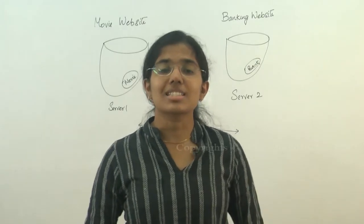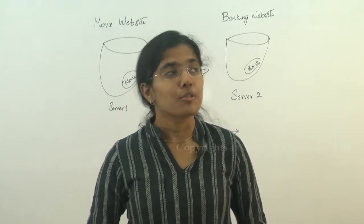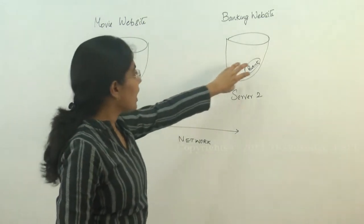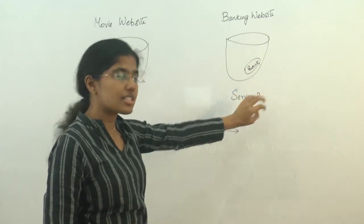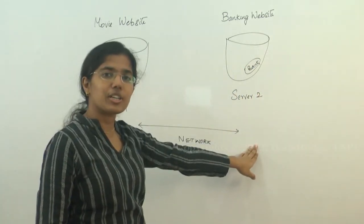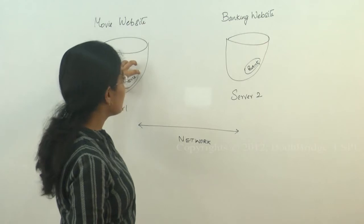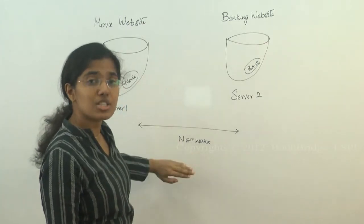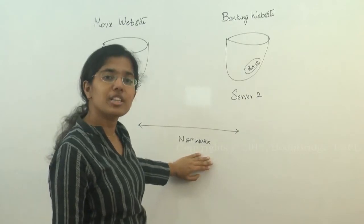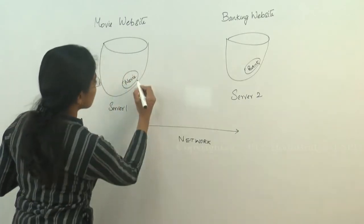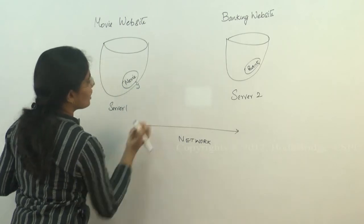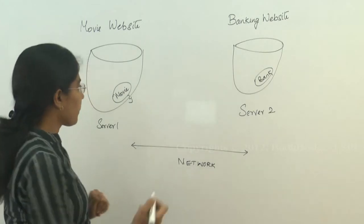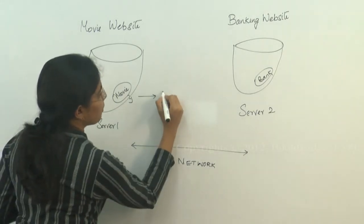Next, we will see what is a platform. We know that movie application is contained in a server and banking application is contained in another server, and they are connected by the network. But how is it that the movie application developed in a programming language is able to translate into a language understandable by the network? So what is available for the movie application to make sense with its own server? This is called platform.